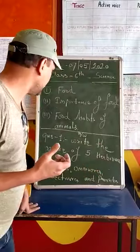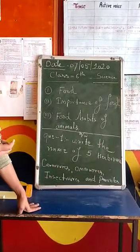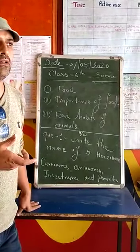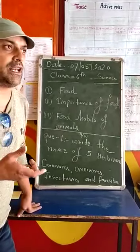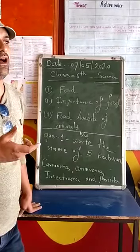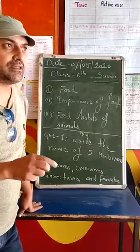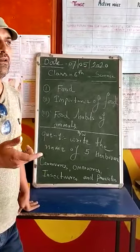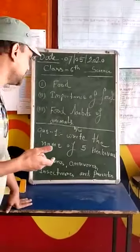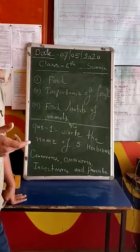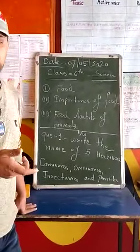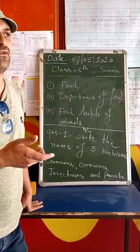Now, the food habits of animals. There are a lot of animals in the world and they have their own modes of nutrition. Herbivorous animals eat plants. Carnivorous animals live on flesh. Omnivorous animals eat both flesh and parts of plants. Insectivorous animals depend on insects for their nutrition. Parasites depend on their host and take food from their host.